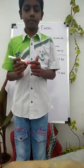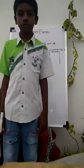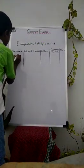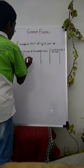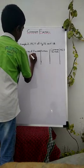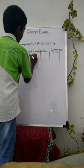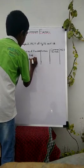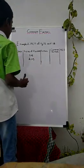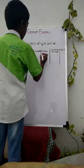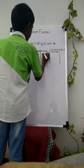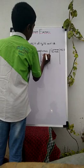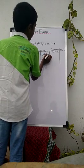Now we will solve the next problem. Number 6. Pairs of factors: 1 × 6, and 2 × 3. So the factors of 6 are 1, 2, 3, and 6.